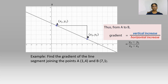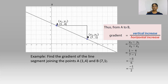Let's take an example. Find the gradient of a line segment joining the points A with coordinates (1, 4) and B with coordinates (7, 1). Let us label the diagram. A has coordinates (1, 4) and B has coordinates (7, 1). We know that gradient is equal to (y2 minus y1) over (x2 minus x1). So we replace y2 by 1 and y1 by 4, and x2 by 7 and x1 by 1. Therefore, it becomes (1 minus 4) over (7 minus 1), which is minus 3 over 6, which reduces to minus one-half.